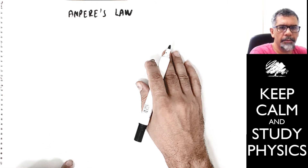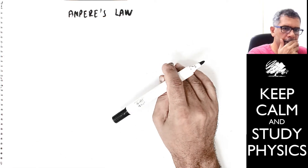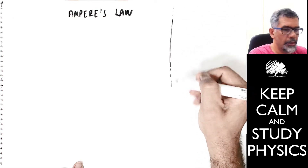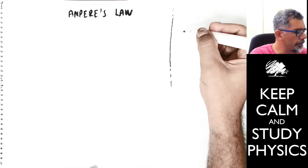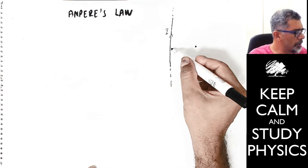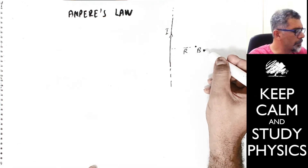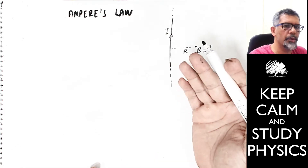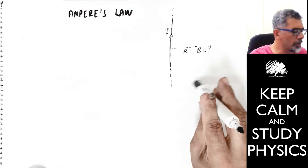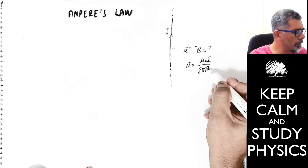Ampere's law is a different way of finding magnetic fields. It may be used for finding magnetic fields without solving the integral given in the Biot-Savart law. For example, if you have a very long wire extending to infinity with some current I, and you want to find the magnetic field at a point with orthogonal distance R to the wire, what we use is normally the Biot-Savart law. For a wire like this, the magnetic field was found to be μ₀I divided by 2πR.